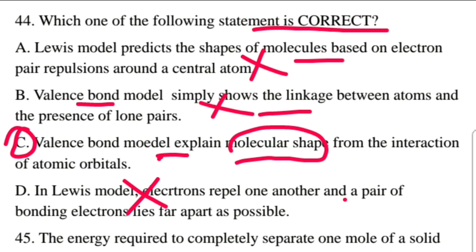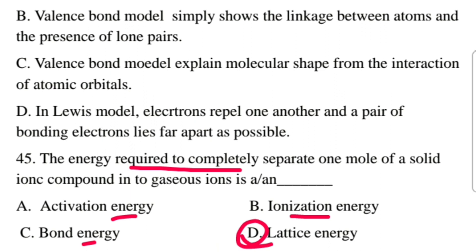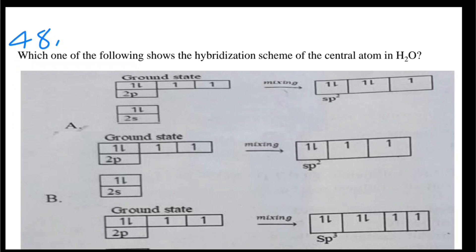Question number 45: The energy required to completely separate one mole of solid ionic compound into gaseous ions is — A: activation energy, B: ionization energy, C: bond energy, D: lattice energy. Activation energy is the minimum amount of energy to start a reaction. Ionization energy is the energy required to remove an electron from the outermost shell of a gaseous atom. So the answer will be D — lattice energy.